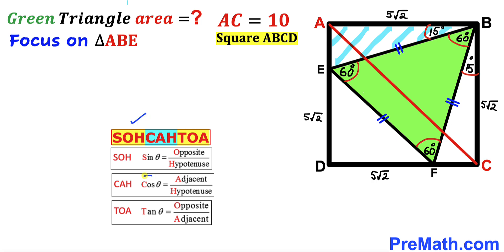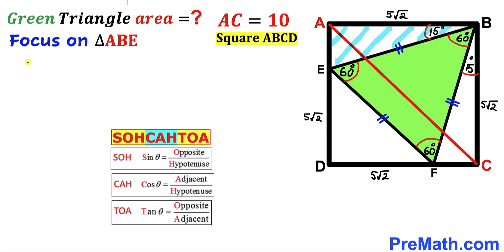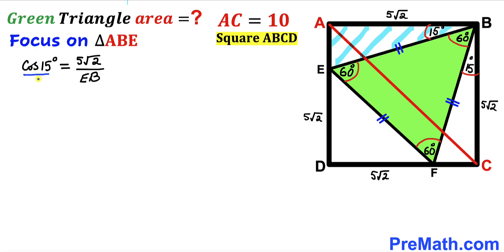We are interested in cosine of angle theta, which equals adjacent divided by hypotenuse. In our case the angle is 15 degrees, the adjacent side is 5√2, and the hypotenuse is the length EB. So cosine of 15 degrees equals 5√2 divided by EB.